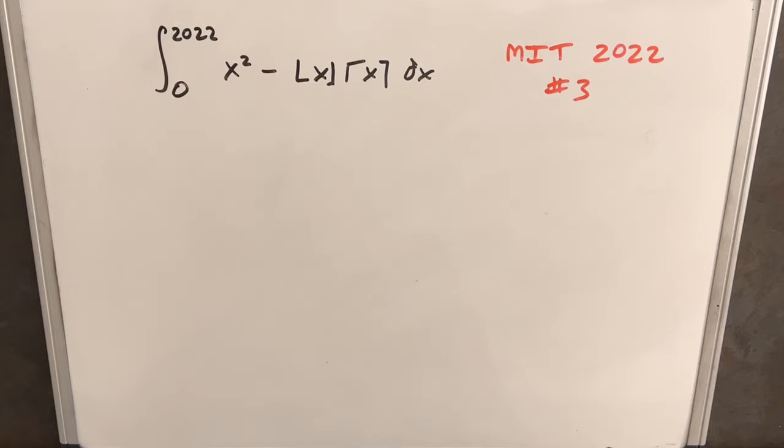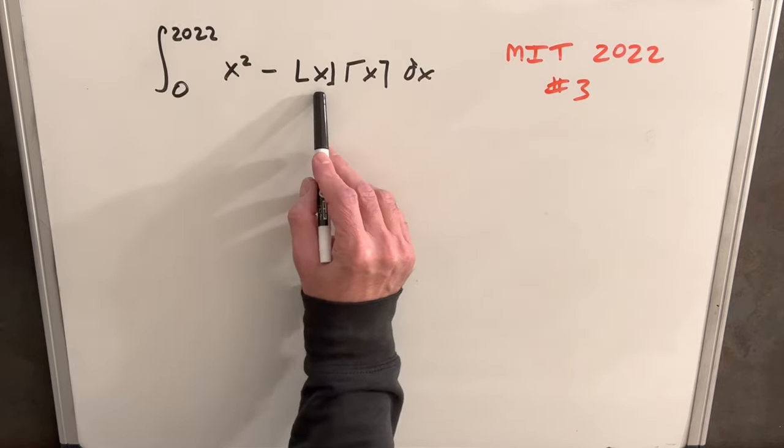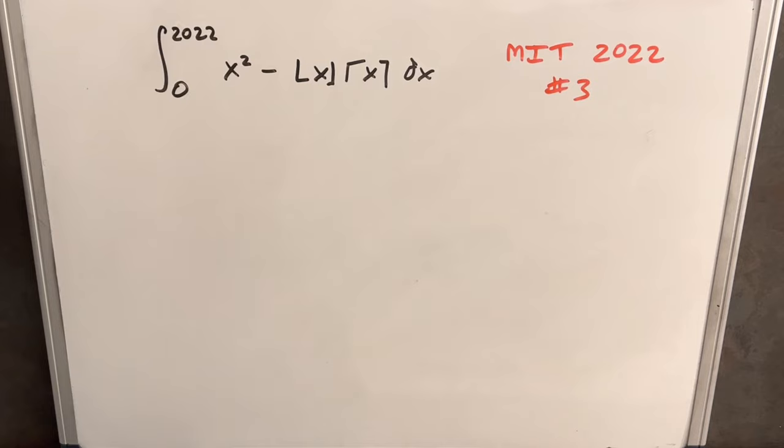Hey, today on the board we have a very interesting problem from MIT Integration B, 2022, problem number 3. To get started, we have the integral from 2022 to 0, x squared plus the floor function of x times the ceiling function of x, dx.